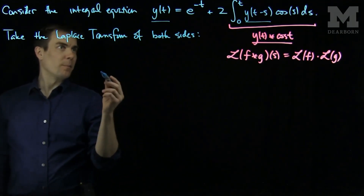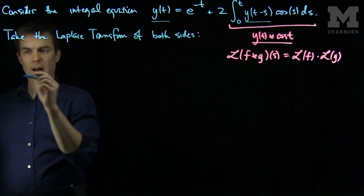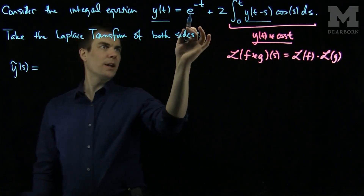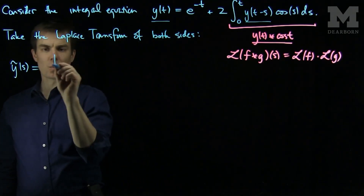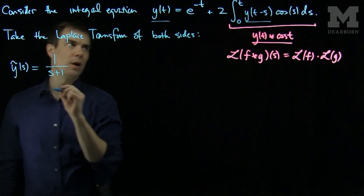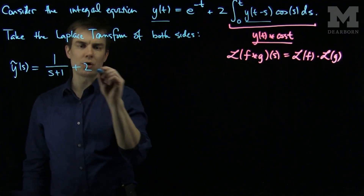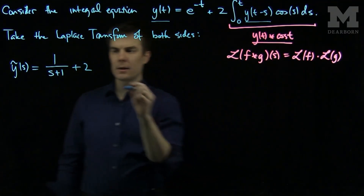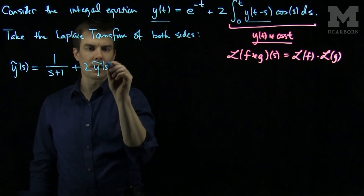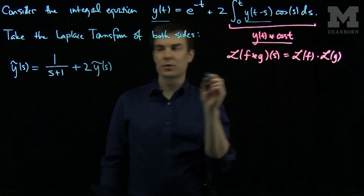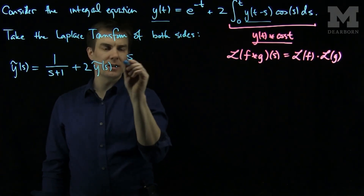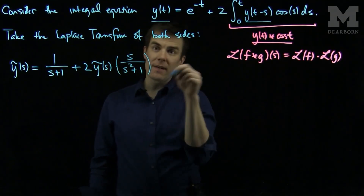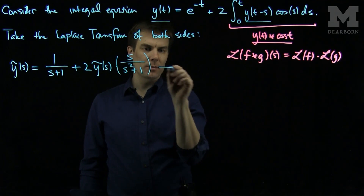When I take the Laplace transform of our particular equation, I will have y-tilde of s equals 1 over s plus 1, plus 2 times the Laplace transform of y times the Laplace transform of cosine. The Laplace transform of cosine is s over s squared plus 1.